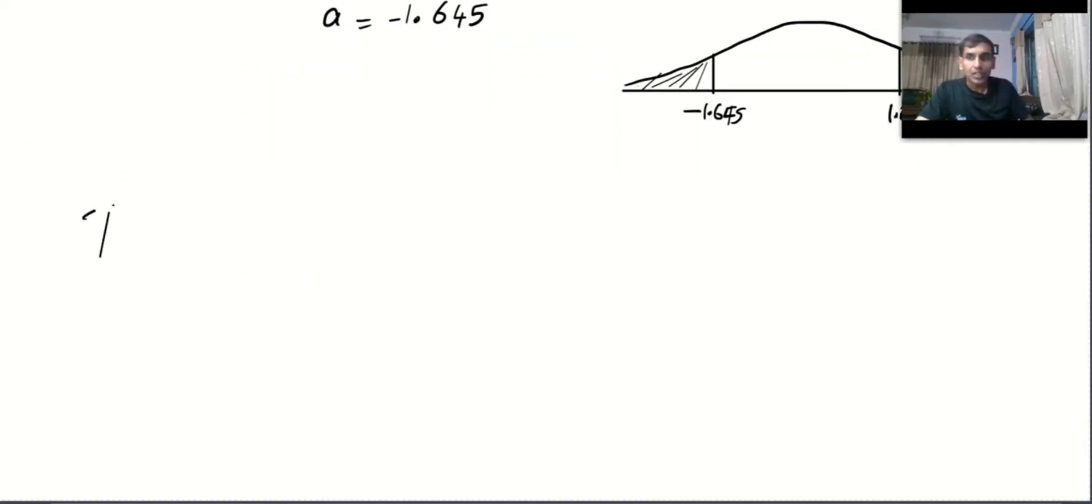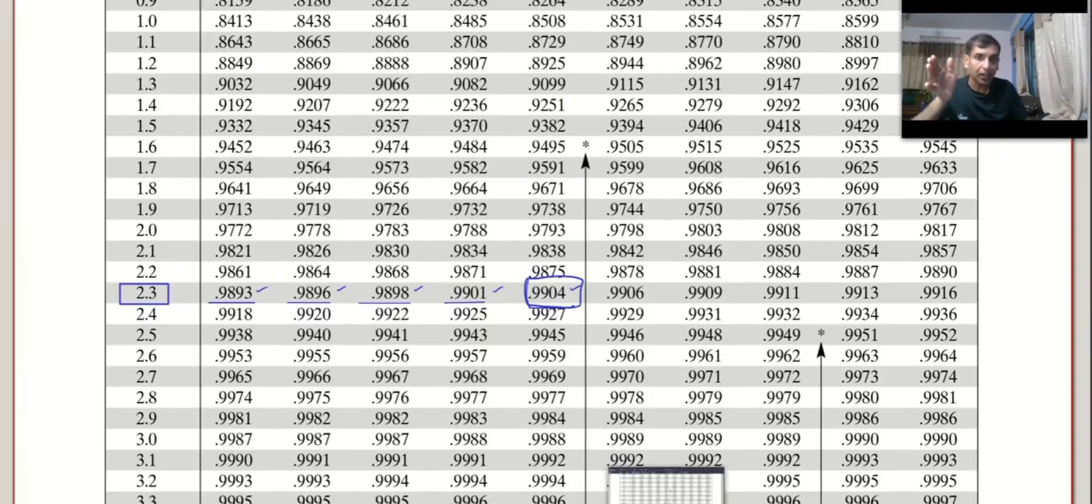I'll give you one question. Suppose probability of Z less than or equal to b is equal to 0.1. Can you find the value of b and put it in the comments? Let's see how many of you can do it. And I wanted to use a calculator and not the tables. I'll be back with another video. So, till then, my friends, bye.